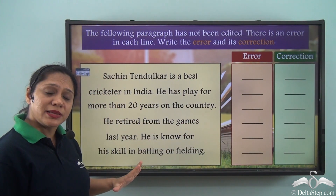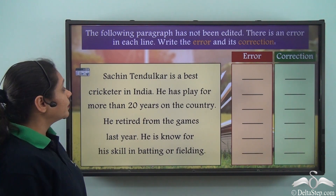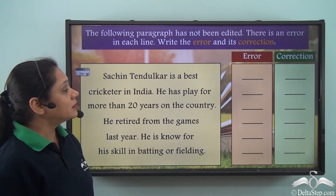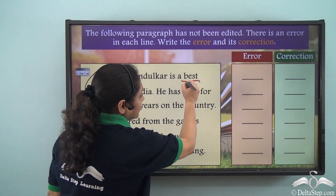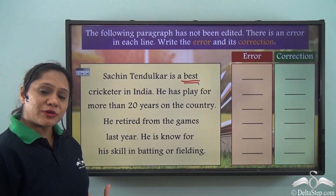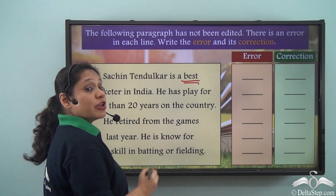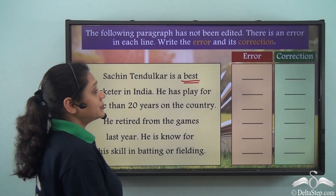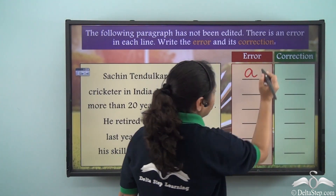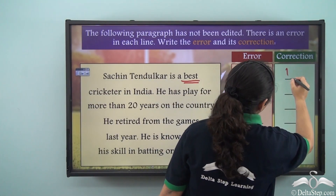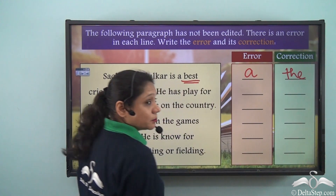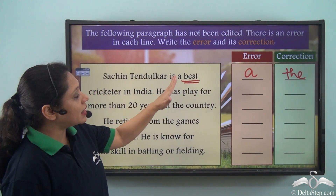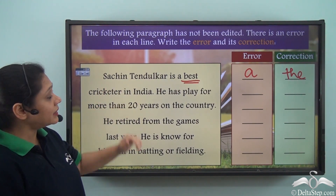Let us read this piece of writing again. 'Sachin Tendulkar is a best.' Now, 'best' is the superlative form of comparison, so we always use 'the' with it. So the first error is 'a' — in place of 'a' it should be 'the'. So: Sachin Tendulkar is the best cricketer in India.